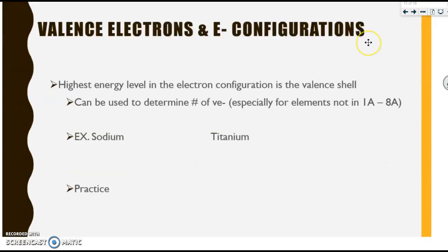Valence electrons and electron configurations. The highest energy level in the configuration is the valence shell, and it can be used to determine the number of valence electrons. So for sodium, it has one valence electron because its configuration is this. Highest energy level, one valence electron. Titanium, on the other hand, has a total of two valence electrons because its configuration is this. The highest energy level here is four, and therefore it has two valence electrons. We will actually practice this in a future video.